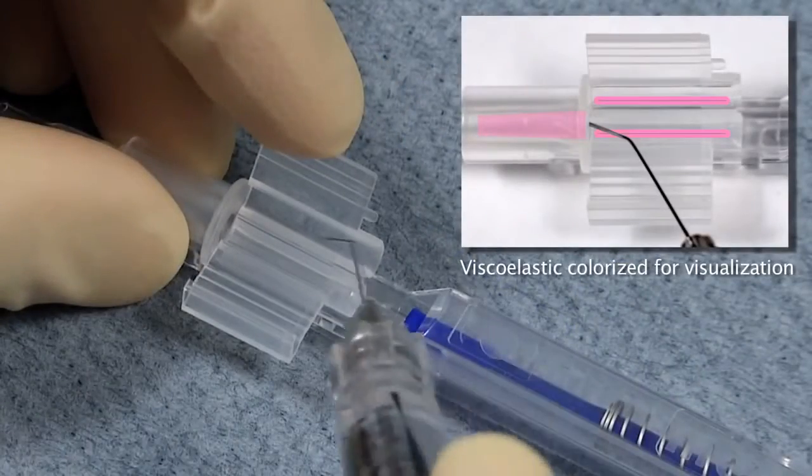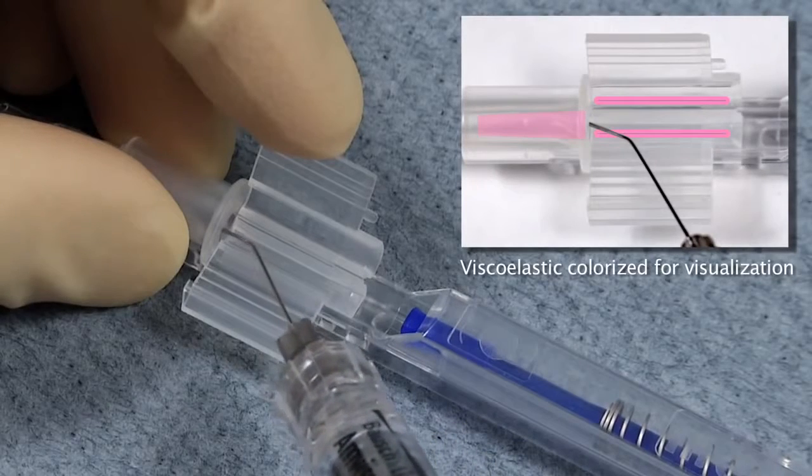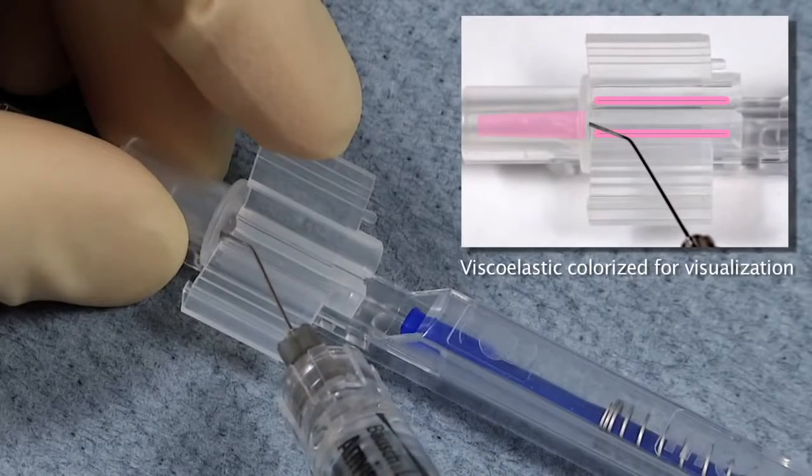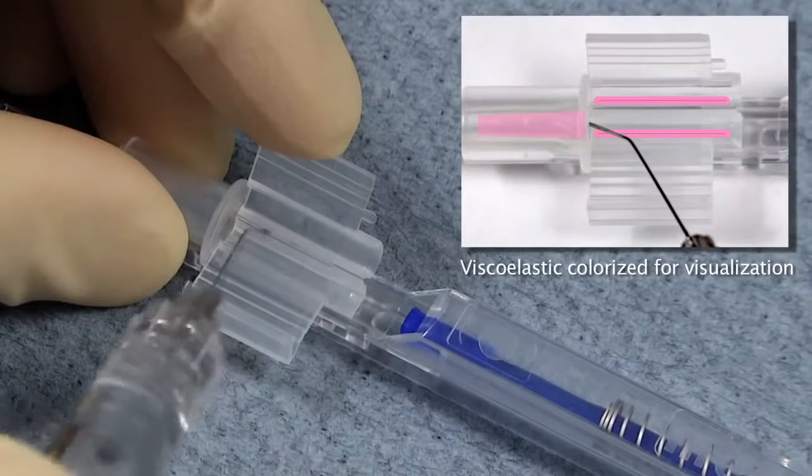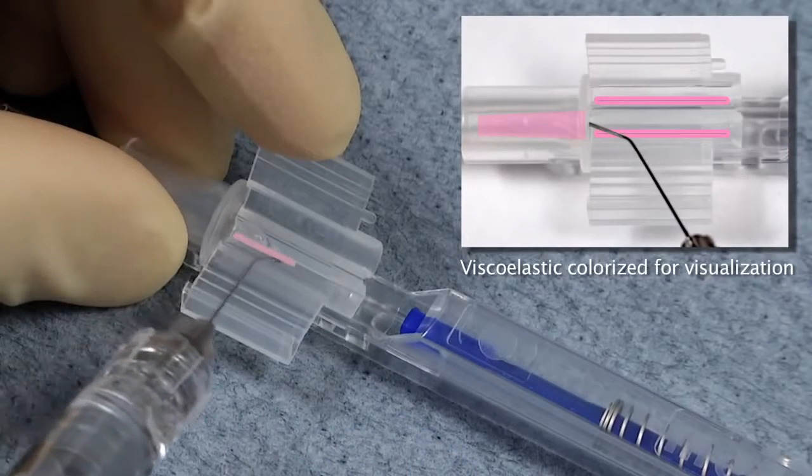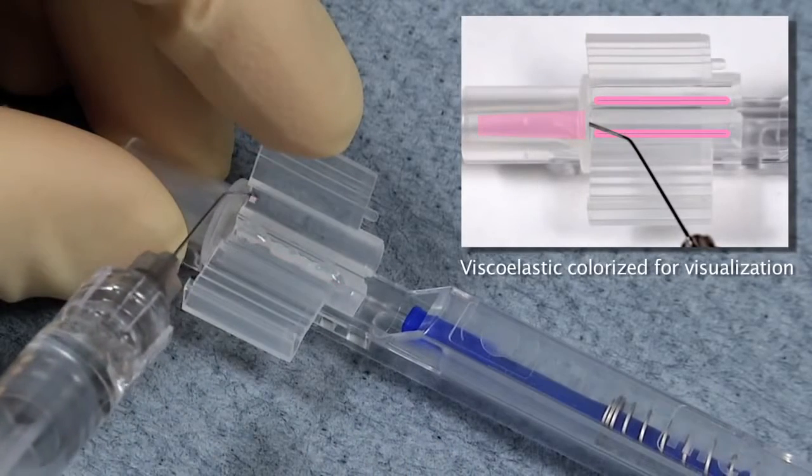Entering from the loading chamber side, apply AmVisc Plus or other Bausch & Lomb Viscoelastic directly into the conical tip and then apply two thin lines into the lateral grooves within the loading chamber.